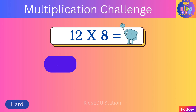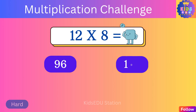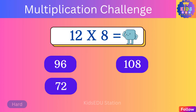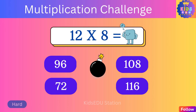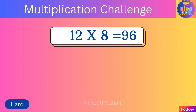What is twelve times eight? Ninety-six, one hundred eight, seventy-two, one hundred sixteen. Twelve times eight is ninety-six.